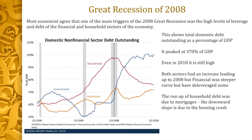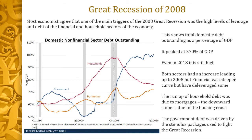Looking at business versus government versus household debt, one of the things you see right away is that household debt went up tremendously — and we're going to find that this household debt was used for buying houses. Business debt also went up tremendously, and there are specific reasons for that. Government debt is interesting because you see this huge debt that comes up — this was money spent trying to stimulate the economy and pull out of the financial crisis.